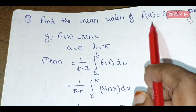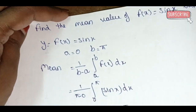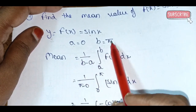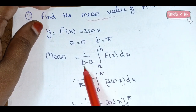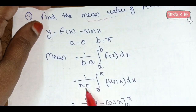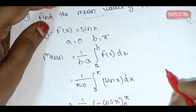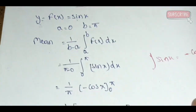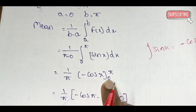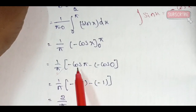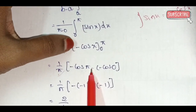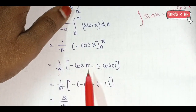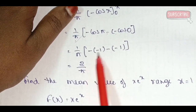Next: find the mean value of f(x) = sin x over [0, π]. Mean value formula: 1 by (π minus 0), integral from 0 to π of sin x dx. Integration of sin x = −cos x. Applying limits: 1/π × [−cos π − (−cos 0)] = 1/π × [1 + 1] = 2/π.